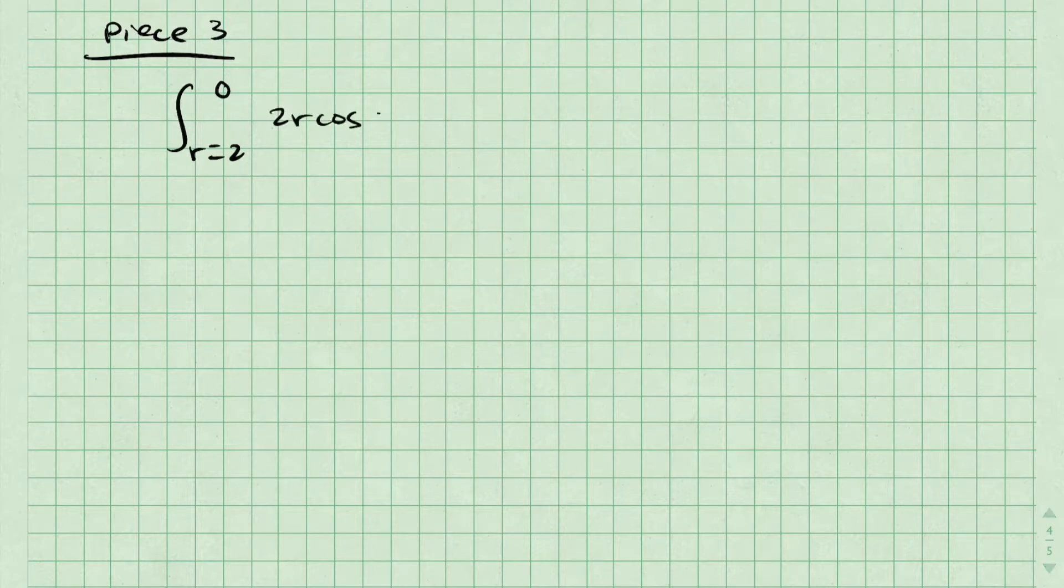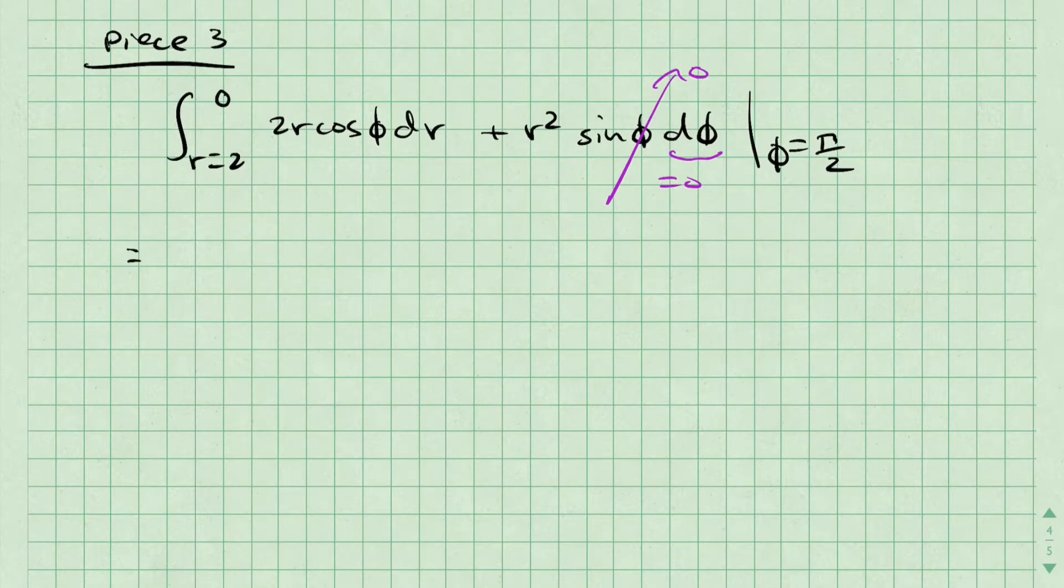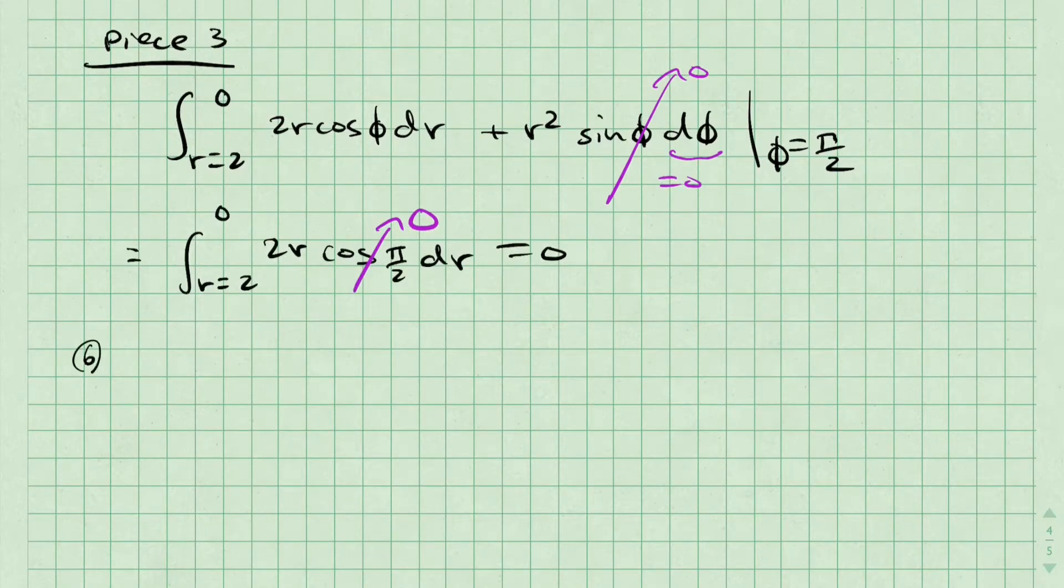For section 3, r changes between 2 and 0, and phi is constant at pi over 2. Since phi doesn't change, d phi is 0. The cosine of pi over 2 is 0, so the result of this integral is also 0.